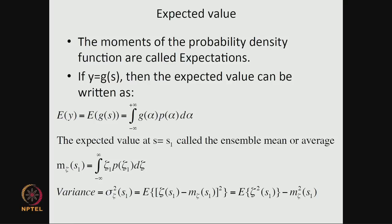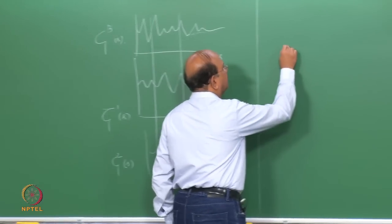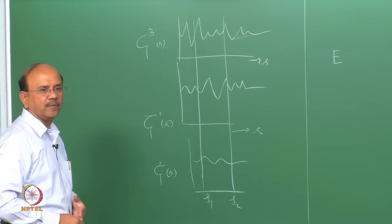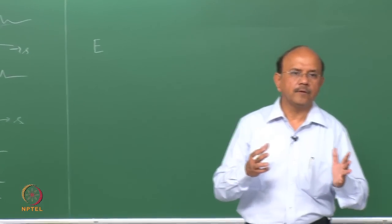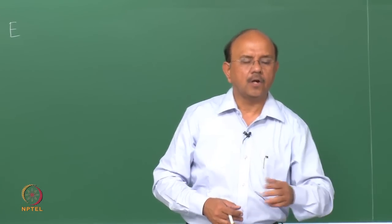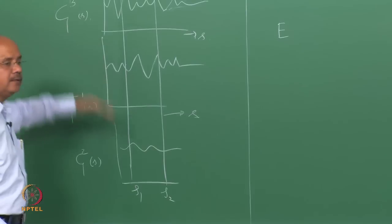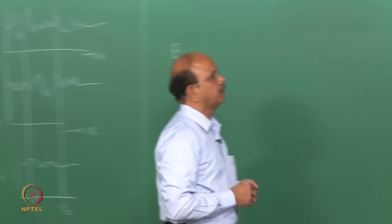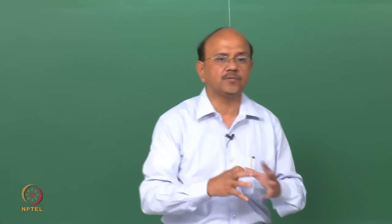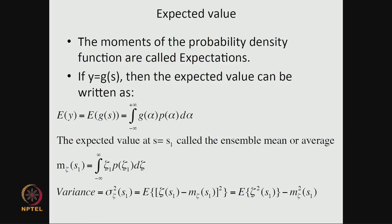When we talk about the ensemble, we talk about what are called expectations — the ensemble average written in terms of expectation. There is a difference between time averaging and averaging across the ensemble. The expected value or ensemble average is given by: the mean equals the integral of zeta times the probability density d zeta. The key equation is that the expected value of a function y = g(s) is given by the integral of g(alpha) times p(alpha) d alpha.